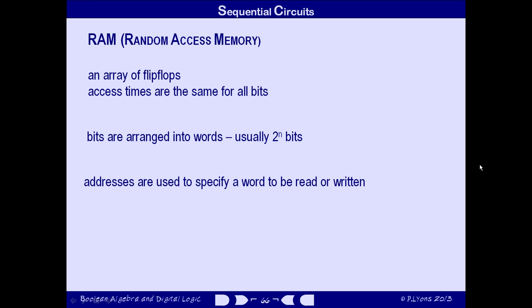We need to develop some way of specifying the location that will be accessed. We'll do that by supplying the memory with a number, which is called the address of the word that we're reading or writing. Finally, before we get to the actual design, a slight complication.